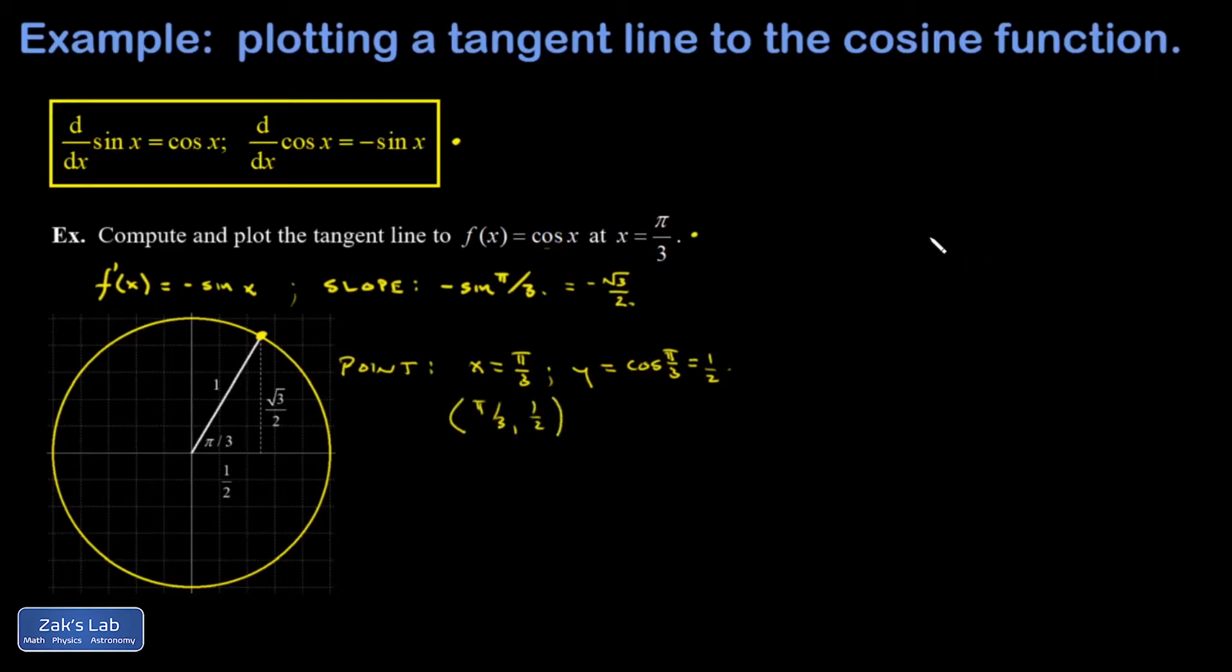To wrap things up, I go to the point slope formula. Looks like this in general. You have a known point, x naught, y naught, and you have a known slope, m. And this will give you the equation of the line immediately.